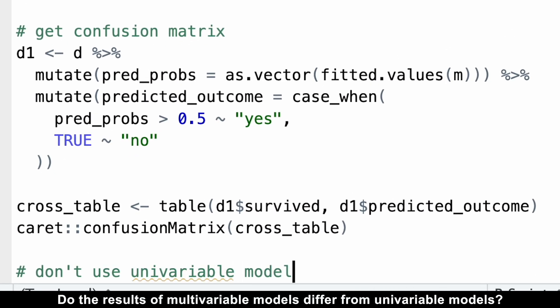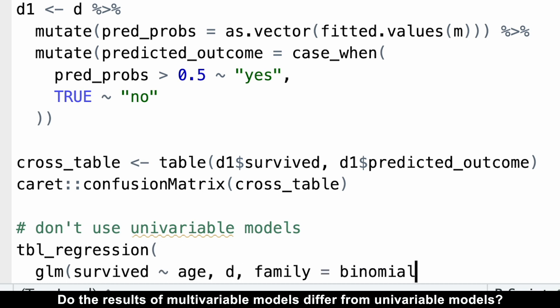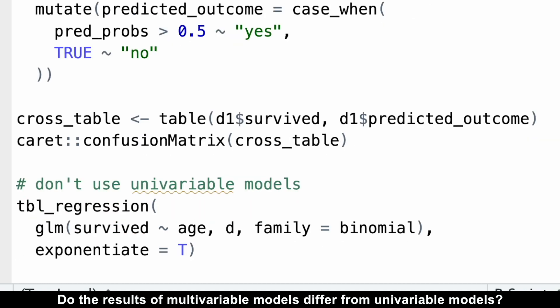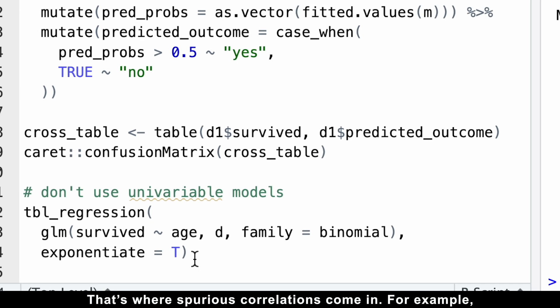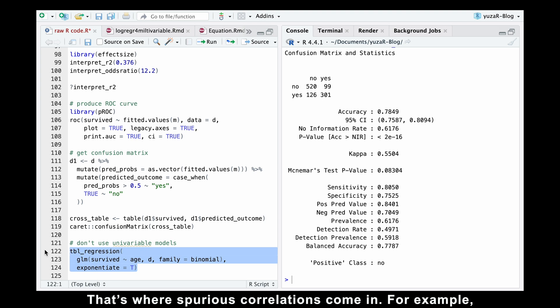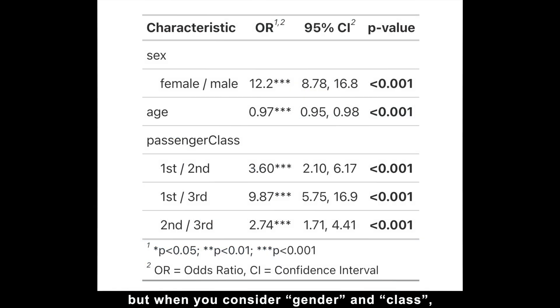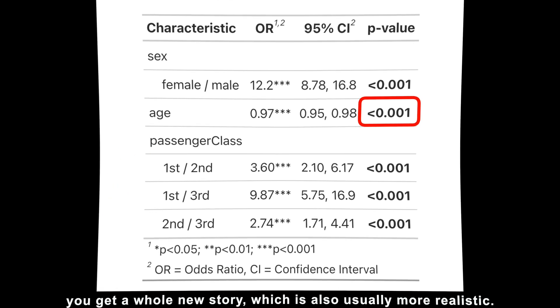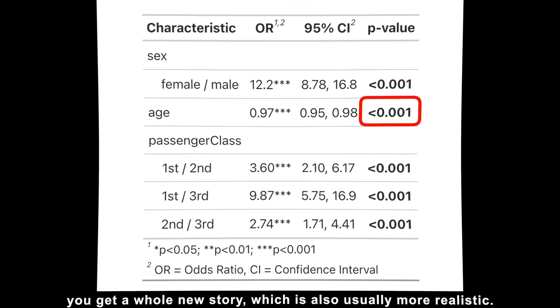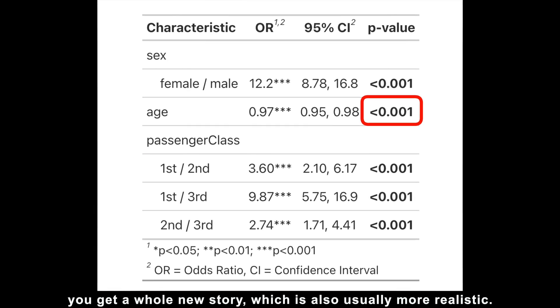And the final question is, do the results of multivariable models differ from univariable models? Absolutely. When you look at things one by one, univariable models, you might miss the big picture. That's where spurious correlations come in. For example, age might not seem important on its own, but when we consider gender and class, you get a whole new story, which is also usually more realistic.